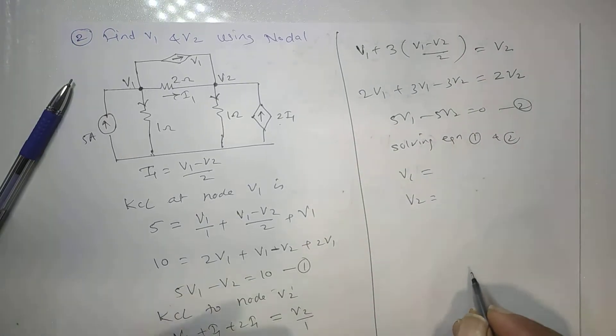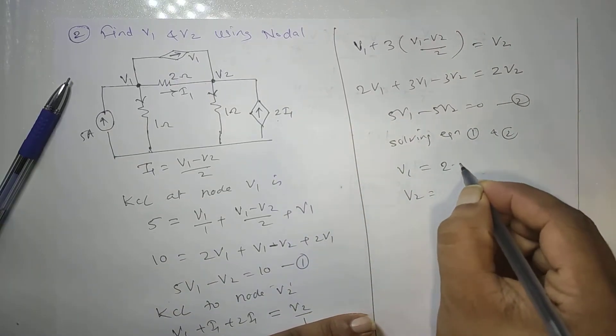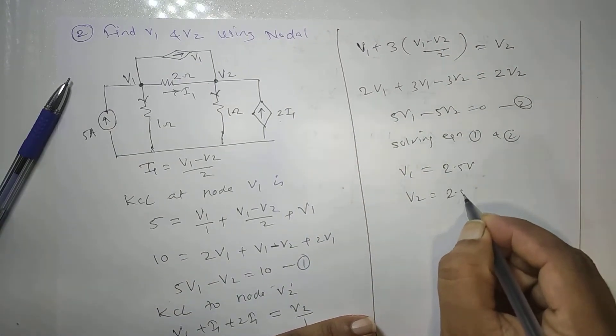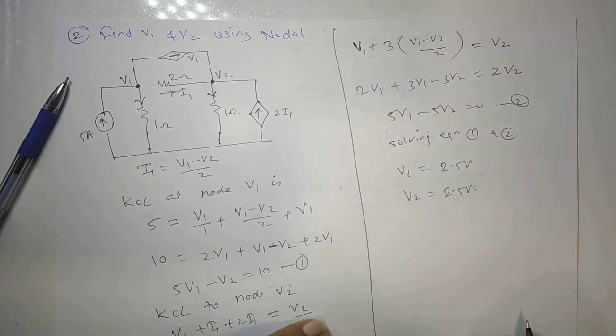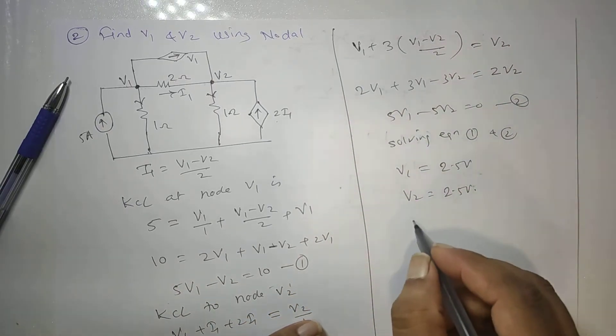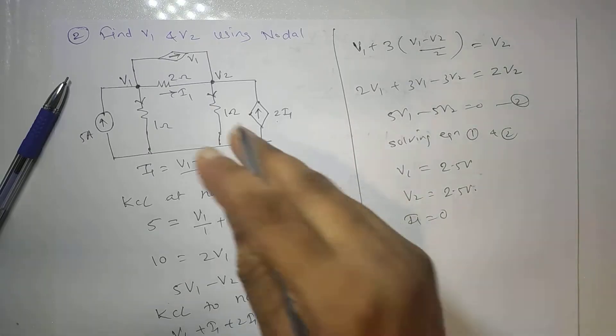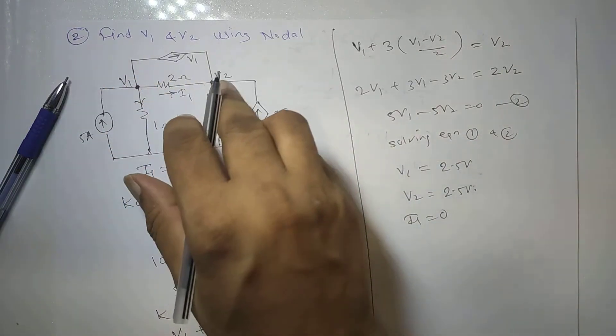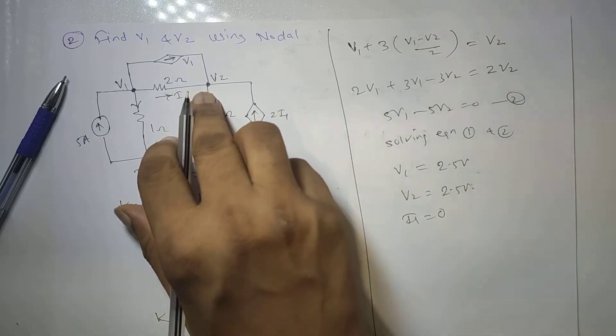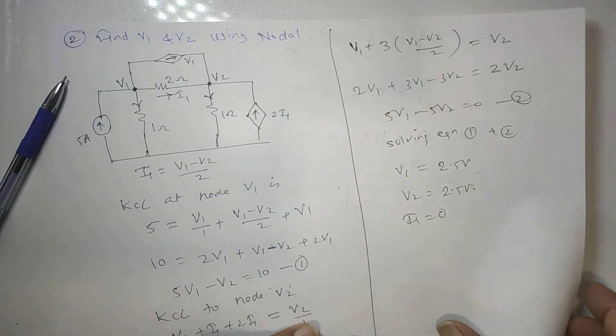Solving equations 1 and 2 simultaneously gives us V1 and V2. Solving these two equations, V1 comes out to be 2.5 volts and V2 comes out to be 2.5 volts. Therefore I1 is zero, because both voltages are the same — they are equipotential — so no current flows through that branch. This completes problem 2.